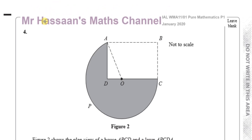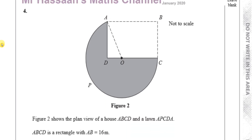In this question we have a plan view of a house ABCD — that rectangle shape — and a lawn APCDA. So it's kind of like a sector of a circle with a bit taken out of it.